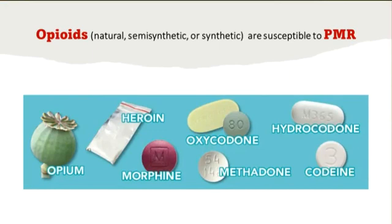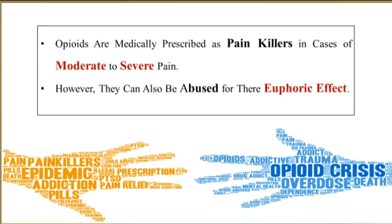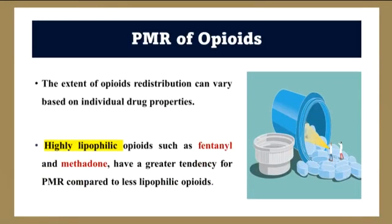Opioids — either natural, semi-synthetic, or synthetic — are susceptible to post-mortem redistribution with variable degrees. Opioids are medically prescribed as painkillers in cases of moderate to severe pain. However, they can also be abused for their euphoric effects. Post-mortem redistribution of opioids poses challenges in determining the cause of death — for example, distinguishing therapeutic use from overdose and assessing the contribution of opioids to the fatal outcome. The extent of opioids' redistribution can vary based on individual drug properties. Highly lipophilic opioids such as fentanyl and methadone have a greater tendency for post-mortem redistribution compared to less lipophilic opioids.